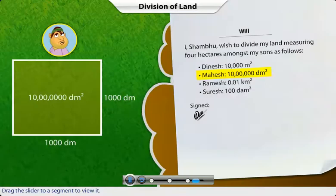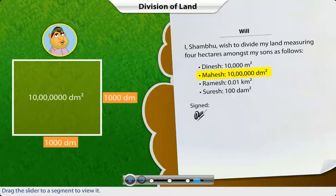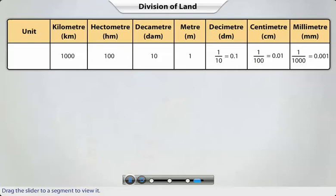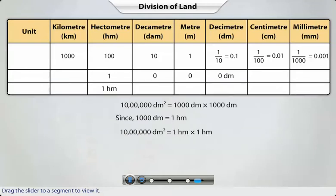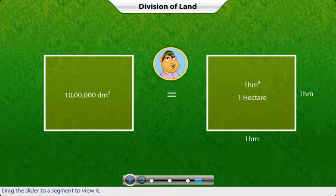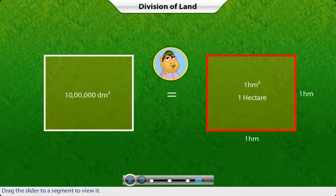Now, Mahesh — your father has willed you ten hundred thousand square decimeters of land. Assuming that the plot is square shaped, the length of its sides is one thousand decimeters each. Since one thousand decimeters is also equal to one hectometer, the area of the land will be one square hectometer, or one hectare. So Mahesh also gets one hectare of land.